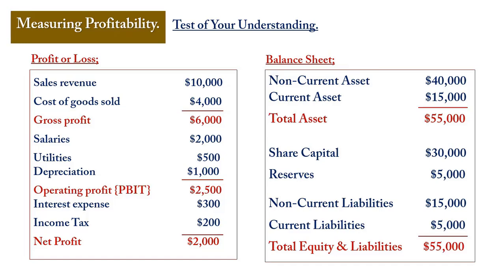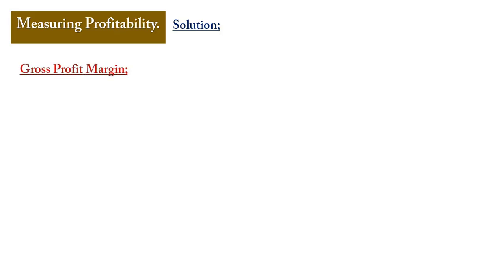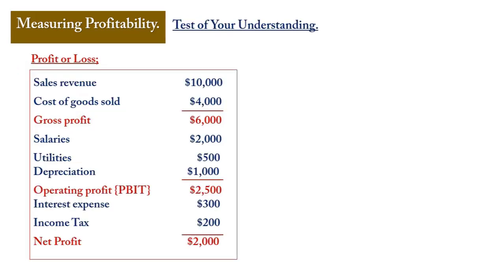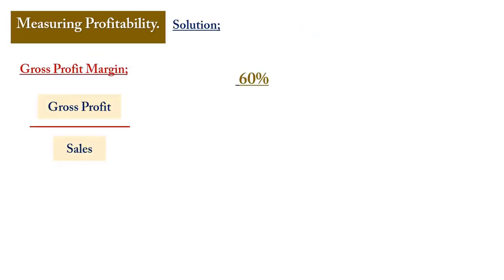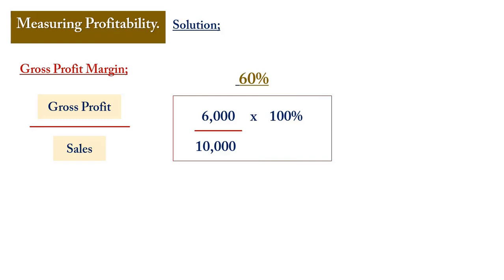We also have the balance sheet showing non-current assets, current assets, total assets, share capital, reserves, non-current liabilities, and current liabilities — the total assets matching total equity and liabilities. To solve for gross profit margin using the formula gross profit divided by sales: gross profit is £6,000 and revenue is £10,000, giving a gross profit margin of 60%.